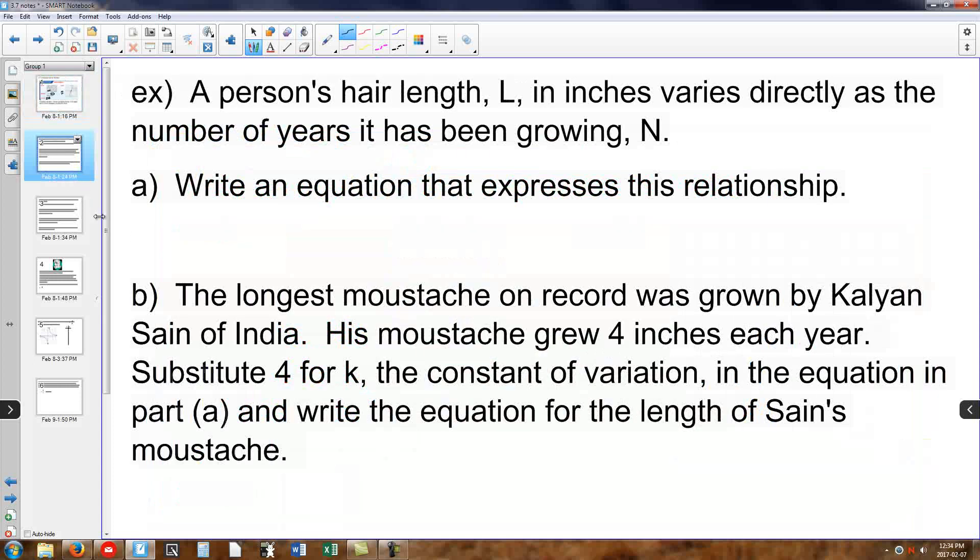So let's look at some examples. If we look at the first example, we're going to compare a person's hair length in inches as compared to, or varies directly with, the number of years it's been growing. And so if we just write an equation that expresses this, we're remembering that y equals kx is the structure of our equation. At this point, we haven't been told what k is, and so we're just going to have to write that l equals kn. We don't know what k is yet, so our equation's not complete.